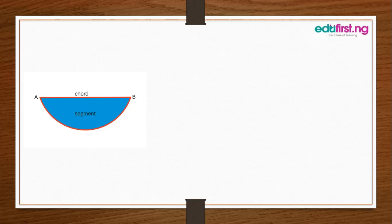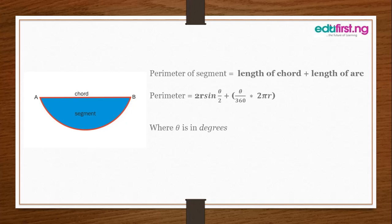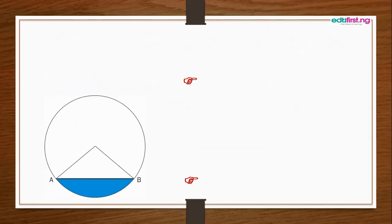The perimeter of a segment equals length of chord plus length of arc. In formula terms, that's: perimeter = 2r sin(θ/2) + (θ/360) × 2πr, where θ is in degrees.